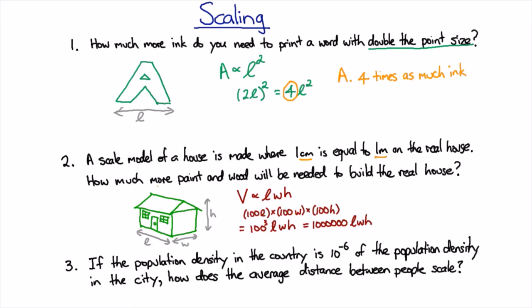Well, paint just covers the surface of things. And the surface of things is an area. And so this area here is a height times a width. This area here is a length times a height. And so on. And we know that area scales as the square of the length. And so we know that the area will go as length squared. And so if we increase our length by a factor of 100, then we'll increase our area by a factor of 100 squared, which is 10,000.